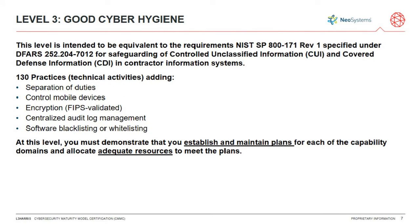Ed interrupts with an audience question: if having CUI means I'm subject to level three, do I also have to satisfy levels one and two? David confirms: yes, you do. The maturity part of CMMC means you can't achieve level three without having done the basics of level one. Every level three control requires that level two and level one controls are in place — they are meant to be a stepping stone of controls.